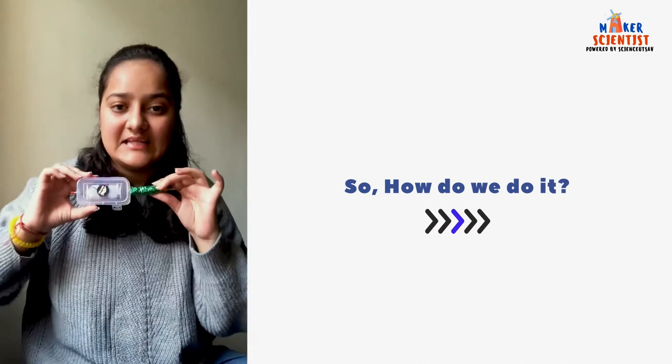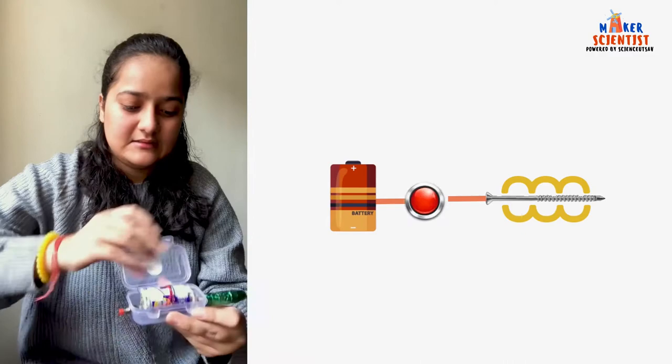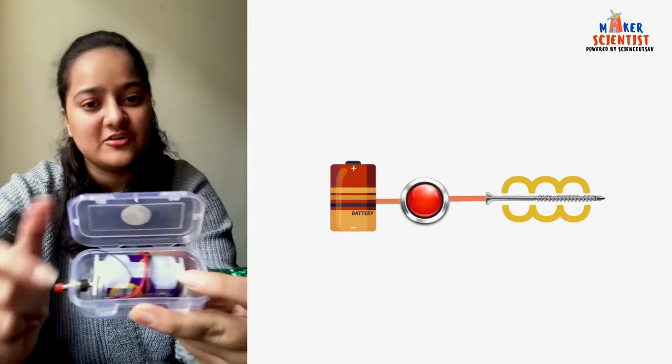An electromagnet is created when a copper wire is coiled around a screw. Then, the wire is connected to a battery, and the battery is also connected to a push button which helps in switching on and switching off the circuit.